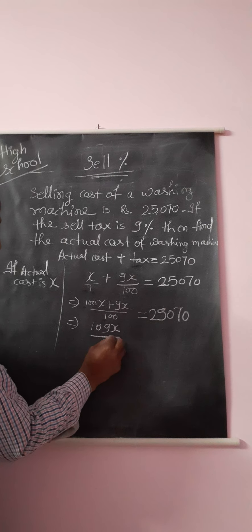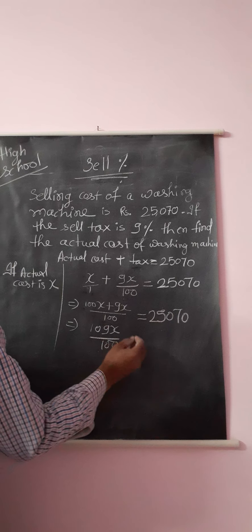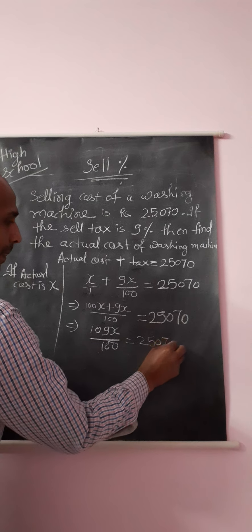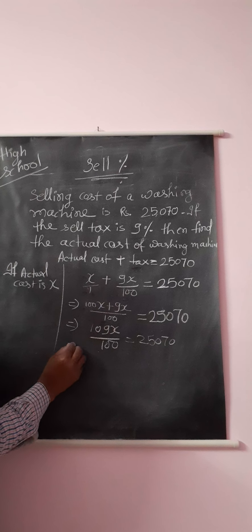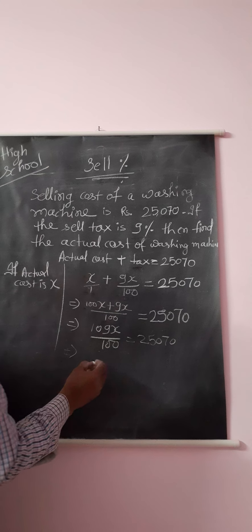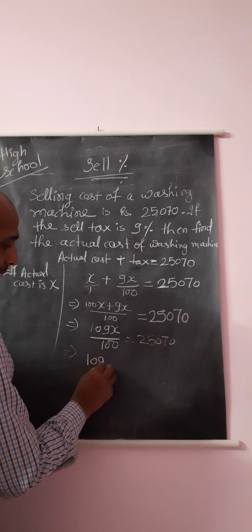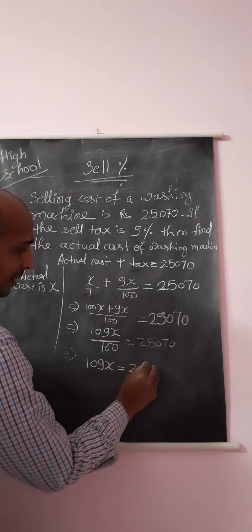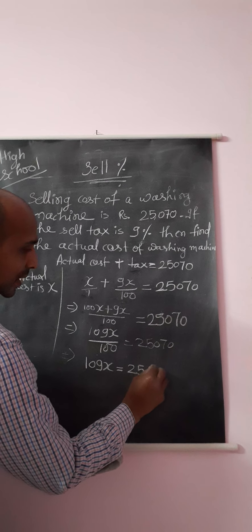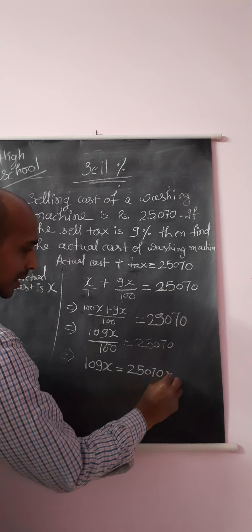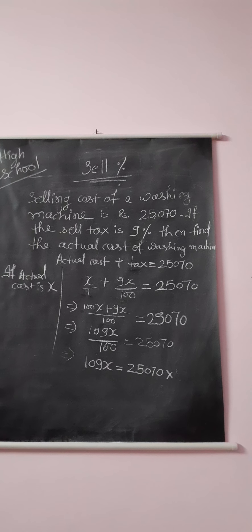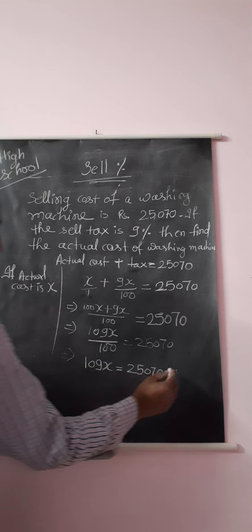From here, 109x equals 25,070 multiplied by 100.